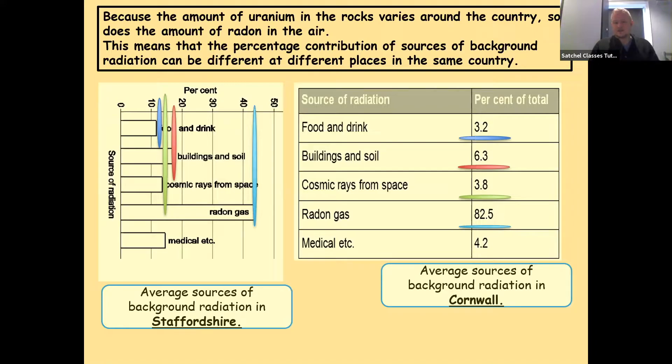Radon gas—even though both are high here, 43% in Staffordshire, 82.5% of the total in Cornwall. That's a big jump, and that's because of the differences in the rocks underneath the two places. Cornwall obviously having more uranium-containing rocks which are decaying and releasing radon gas than Staffordshire.